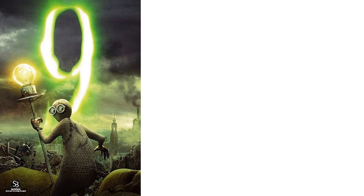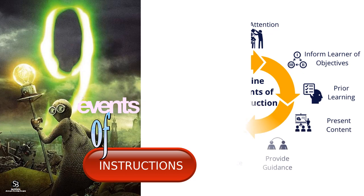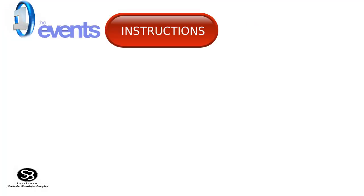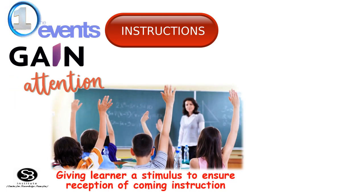Now let's look at Robert Gagné's nine events of instruction, which involve nine steps: gain attention, inform the learners of the objective, stimulate recall of prior learning, present the stimulus, provide learning guidance, elicit the performance, provide feedback, assess the performance, and enhance retention and transfer.